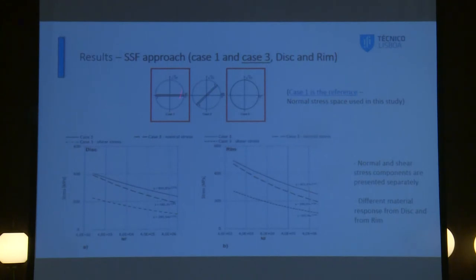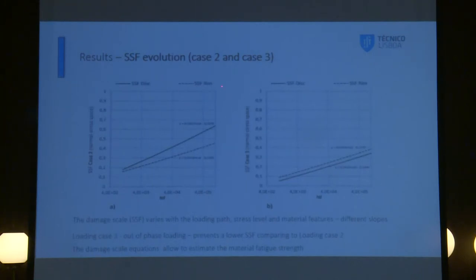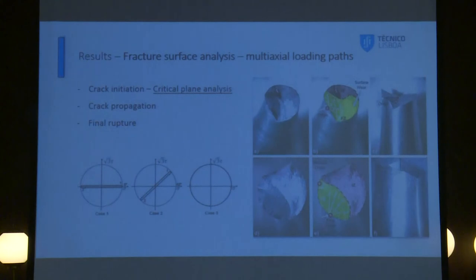The same for case 3. Case 1 is the reference. We have different loadings. And now, just for the web and for the rim, we can see for case 2 and case 3. We obtain different slopes means different materials. We also say that the SSF, the stress scale factor that appears here, varies with the loading, varies with the stress level and also varies with the material feature, the response of the material. We have different curves here. What you have also here is the equation of these curves that allow us, in terms of the life, to characterize, to design or to take into account the number of cycles performed for each kind of loading. Loading 2, case 2 and case 3.